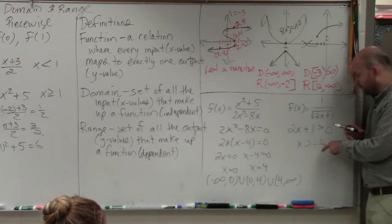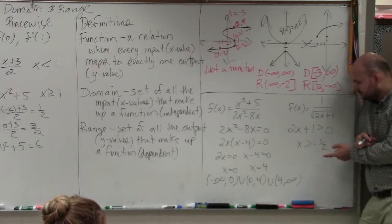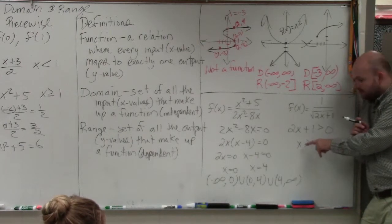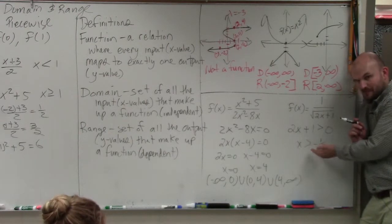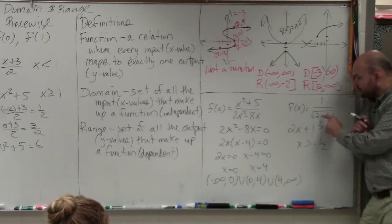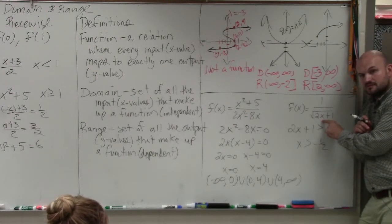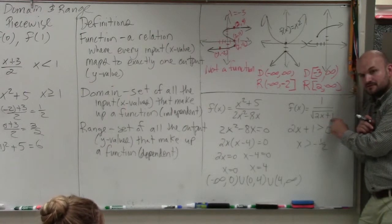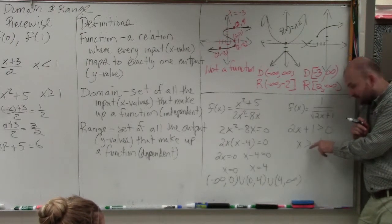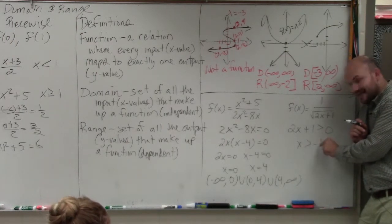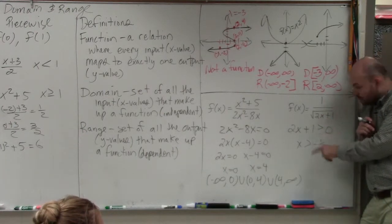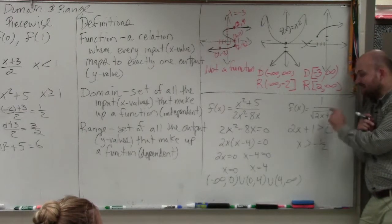What about a number that's greater than negative 1 half? Let's pick a number that's smaller than negative 1 half — let's pick negative 1. 2 times negative 1 is negative 2. Negative 2 plus 1 is negative 1. Can you take the square root of negative 1? No. So all numbers that are not greater than negative 1 half are not a part of the domain. Only numbers that are greater than negative 1 half are a part of the domain.